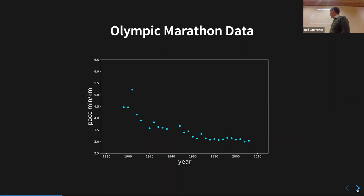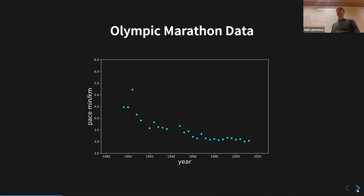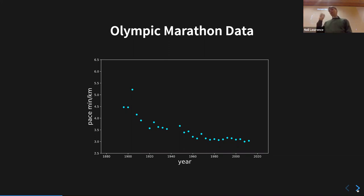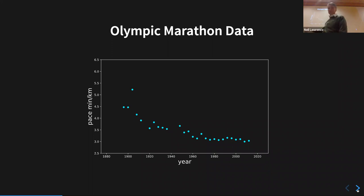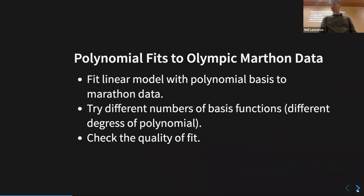The dataset has years of Olympics along the bottom and the winning pace of the gold medal winner. The reason it's pace instead of overall time is that up until just over 100 years ago, around the early London Olympics, the length of the marathon wasn't fixed — it was just over 40 kilometers. What you see is that the best human at the Olympics has gotten better at the marathon over time, and there's some interesting structure in the data.